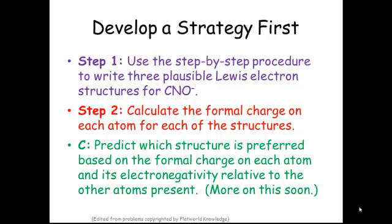You're going to calculate the formal charge on each atom for each of the three structures. And then finally we're going to learn how to predict which structure is preferred based on the formal charge. And to do that, we're going to look at the electronegativity of the atoms in the molecule.